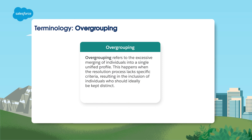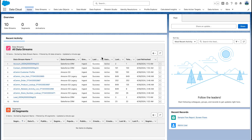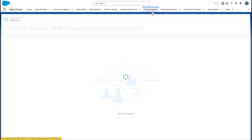Overgrouping happens when individuals are merged without clear criteria, often leading to including individuals who should really be kept separate. Modifying the unified individual page is necessary because the default page doesn't show related data linked to a unified individual profile during identity resolution. We do this from the Profile Explorer tab.